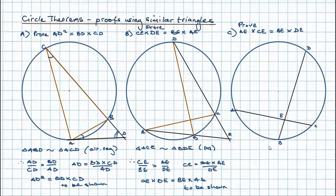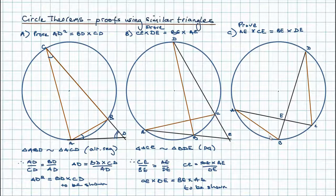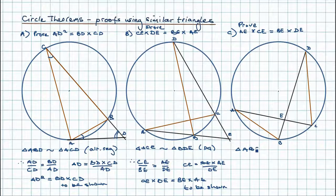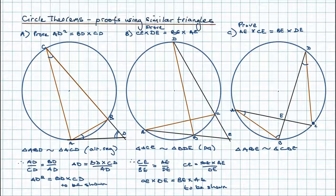We want to look for similar triangles. Join up D to C and A to B, and immediately we can see we're going to use the bow-tie theorem again. Triangle ABE is similar to triangle CDE. The bow-tie theorem tells us that these angles must be the same, and these angles must be the same, so all three angles match.